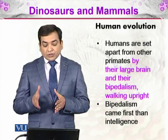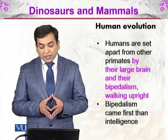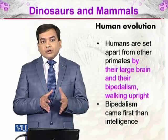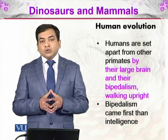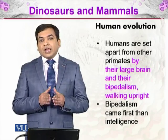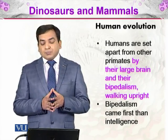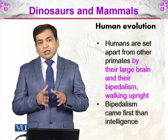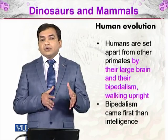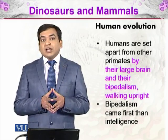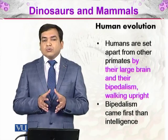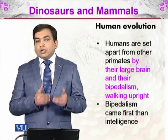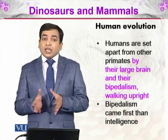Humans are set apart from other primates by their larger brain and their bipedalism — that is, walking upright. Humans walk on their two feet, and that function is called bipedalism. Bipedalism came first before intelligence. They started walking upright, but bipedalism was much more an adaptation to climatic change in Africa, and intelligence came later.